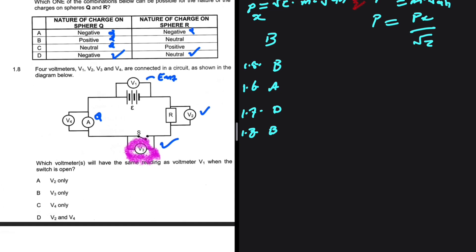So the answer to 1.8 is B. If you cannot see how this comes about, you can actually open a simulation online and set up this circuit and look at the reading on V1, V2, V3, and V4. The reading on V1 and V3 will be the same. So the answer to 1.8 is actually B.